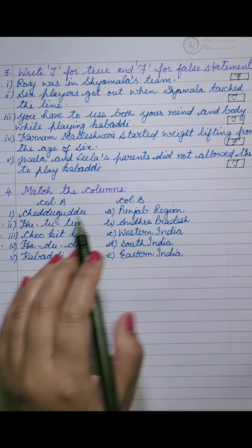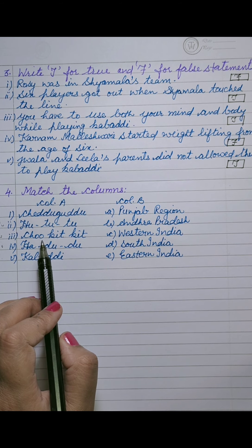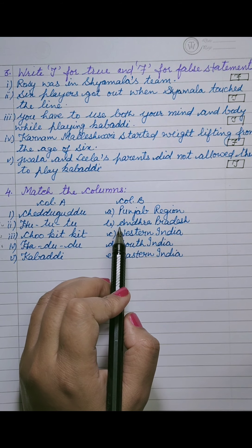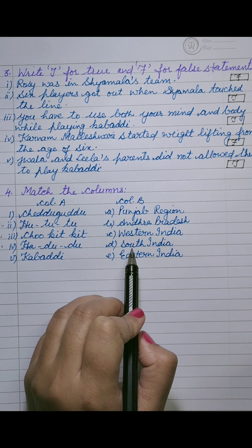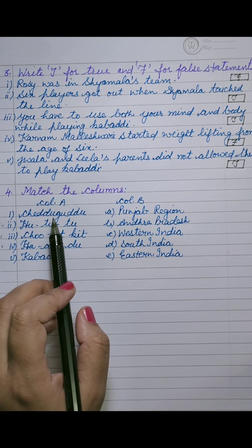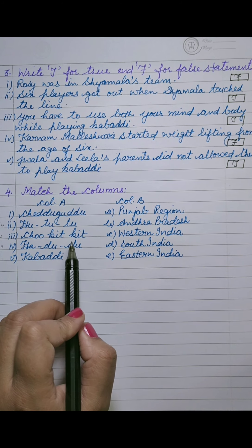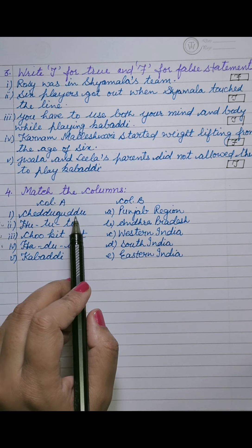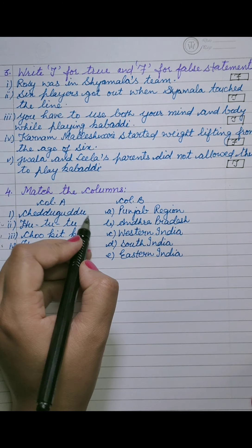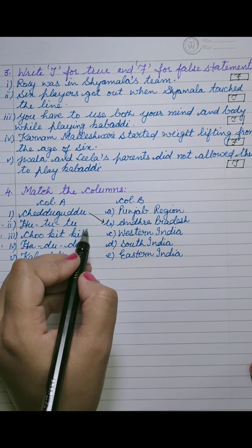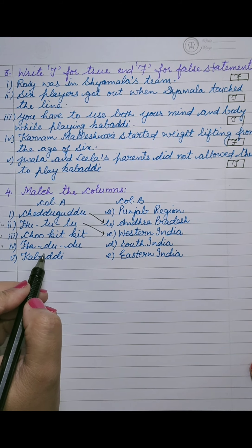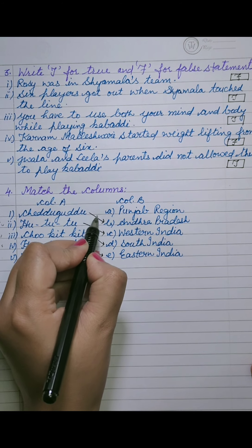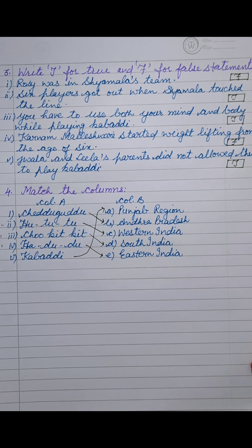Next is match the columns. Under Column A we have: Chadugudu, Kutu, Chukitkit, Hadudu, and Kabaddi. Under Column B we have regions. Kabaddi has five names in different regions — Shadugudu matches with Andhra Pradesh, Hatutu with West India, Chukitkit with South India, Hadudu with Eastern India, and Kabaddi with Punjab region.